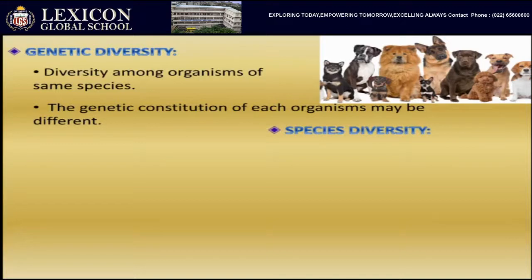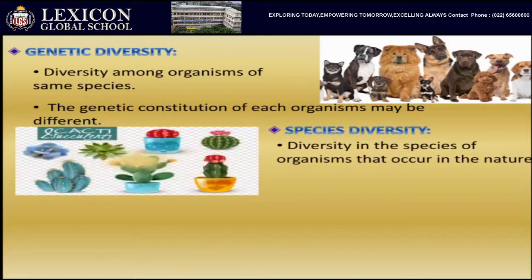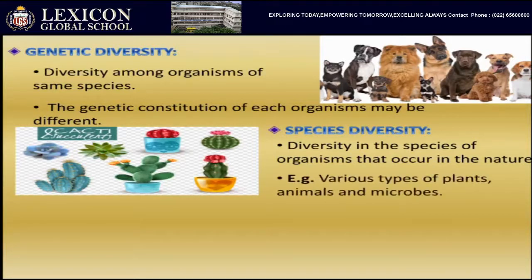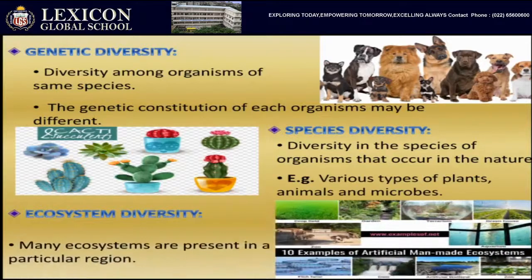The second level is species diversity — diversity in the species of organisms that occur in nature. There are various plants, animals, and microbes with different species. For example, some cactus are harmful and poisonous, while some are medicinal — this is species diversity.